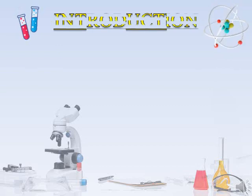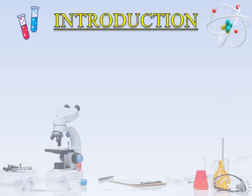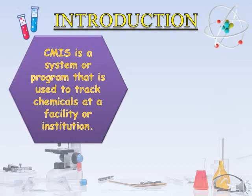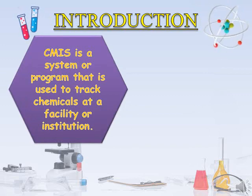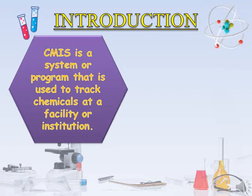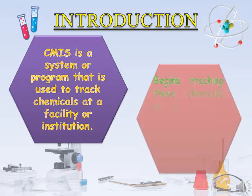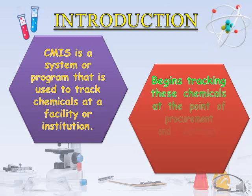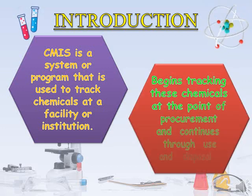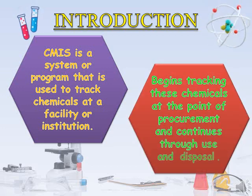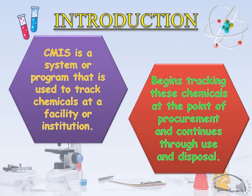Introduction to CMIS Software: the Chemical Management Inventory System, CMIS, is a system or program used to track chemicals at a facility or institution. An effective CMIS begins tracking these chemicals at the point of procurement and continues through use and disposal.